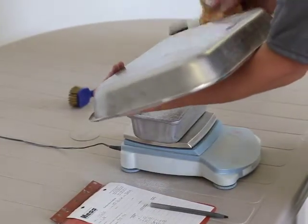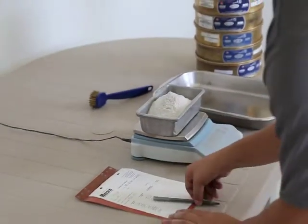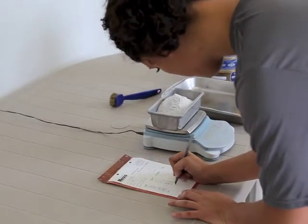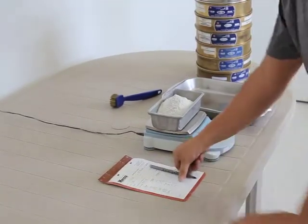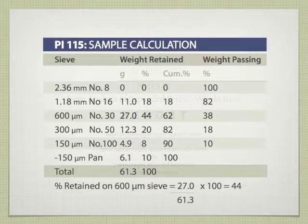The results of the sieve analysis shall be reported as follows: either total percentages passing each sieve, or total percentages retained on each sieve, or percentages retained between consecutive sieves, depending upon the form of the specifications for the use of the material under test. Those percentages shall be reported to the nearest whole number and shall be calculated on the basis of the weight of the test sample.